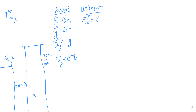In projectile motion, the motion in the horizontal and vertical directions are independent of each other, and they're only connected through time. We know that the ball has to travel a horizontal displacement of 10 meters in the same amount of time it has to travel a vertical displacement of 20 meters. So what we need to do is find kinematic equations in both the vertical and horizontal directions that relate displacement to time.